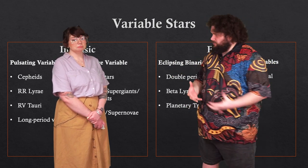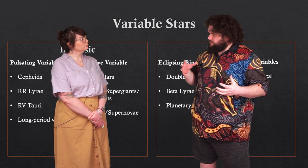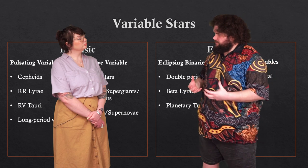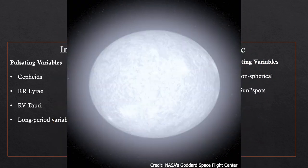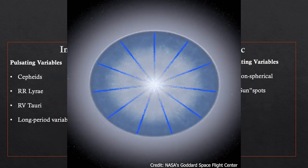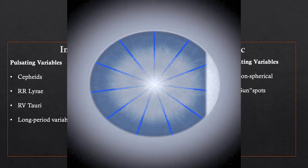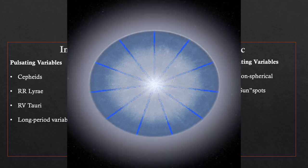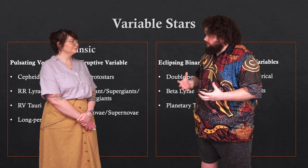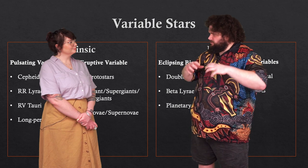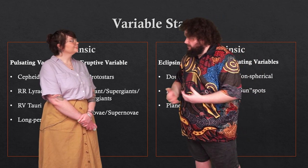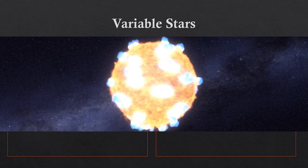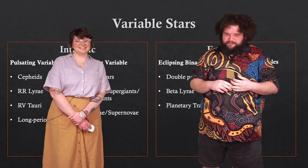For intrinsic variable stars, there are two mechanisms. The first are pulsating variables, where the star gets bigger and brighter and then comes back down and gets less bright again. The second are eruptive variables, where there might be solar mass ejections or even cataclysmic variables and supernovae — another topic we'll discuss later in this course.